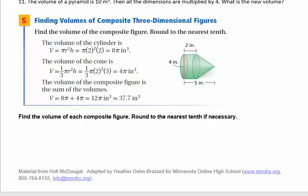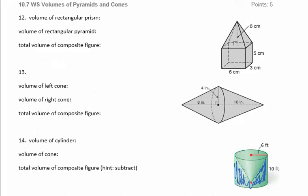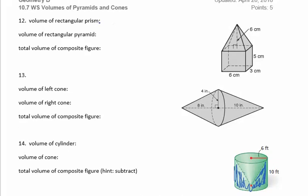Then there are some problems with composite figures. For the volume of composite figures, you find the volume of each part and add them together. But look at number 14 — sometimes you subtract. That figure is a cylinder with a cone cut into it, so you find the volume of the cylinder minus the cone. For the rest, find the volume of both pieces and add them together.